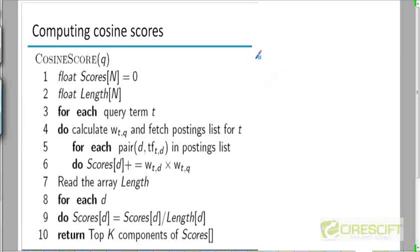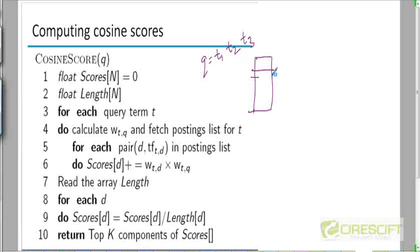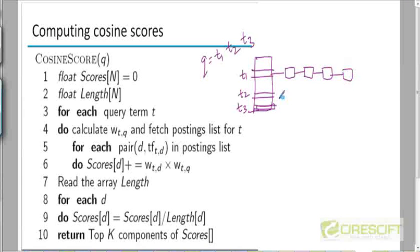If you have an index, let's say the query has three terms — it's a free text query with just three terms: t1, t2, and t3. Conceptually, these are the postings lists for t1, the postings lists for t2, and the doc IDs could be different across the three terms.